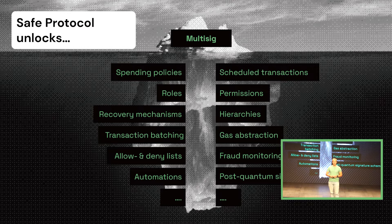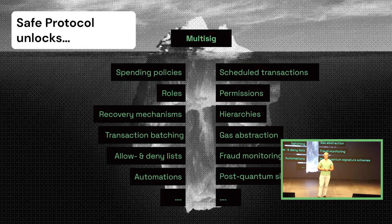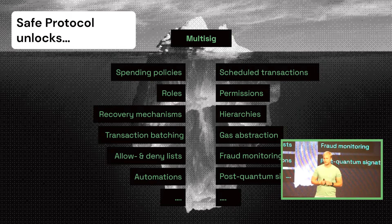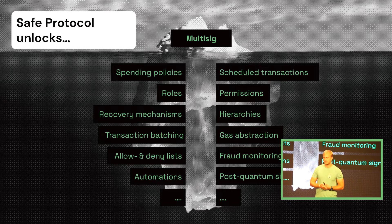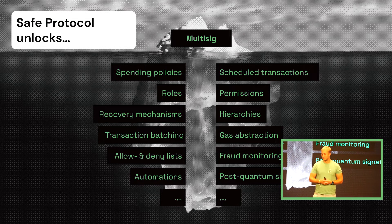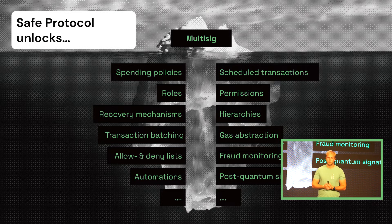Even more useful is the team use case, where different people each have their own private key and can sign transactions. You can define a threshold above which you can execute transactions — for example, four people mentioned and always needing two of those to sign. So it's pretty much like a joint bank account. But this is really just the tip of the iceberg.